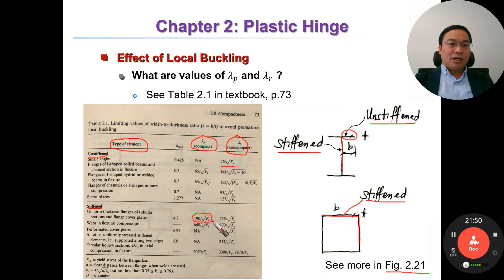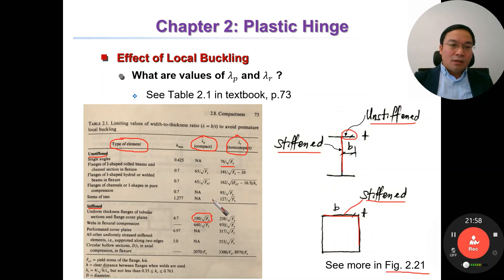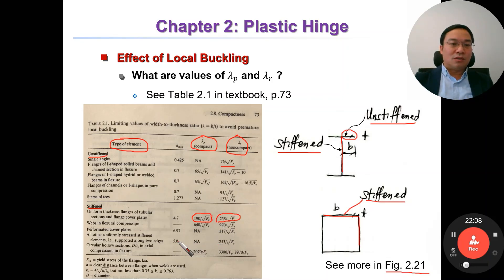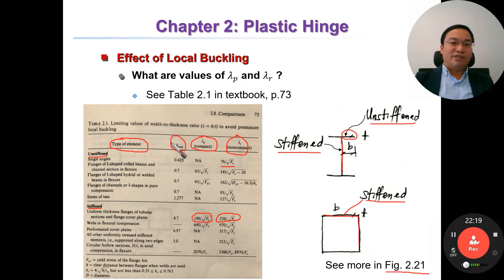One of the biggest problems in steel structures is local buckling, because the cross-sections of structural components are usually made of thin plate elements. Local buckling may occur in both the flange and the web.